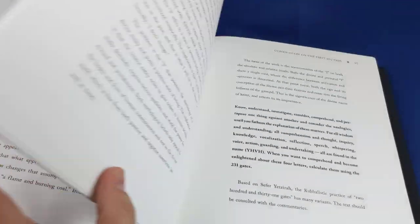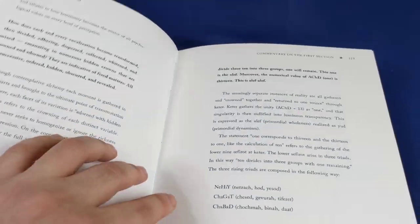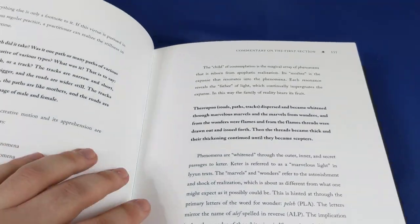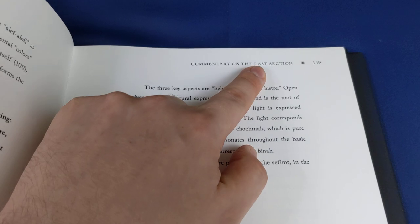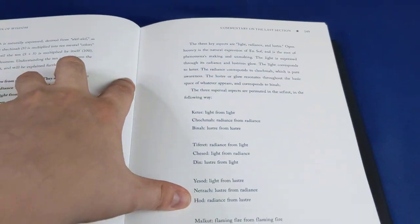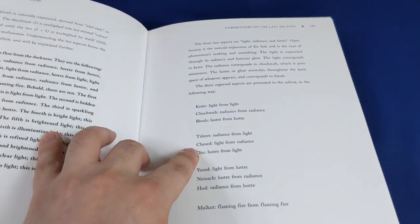It goes all the way through the first section, then there's the commentary on the second section. The last section is everything that comes after that seer's vision.